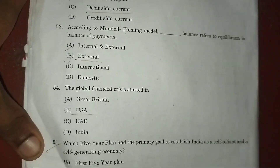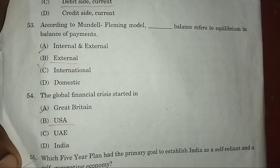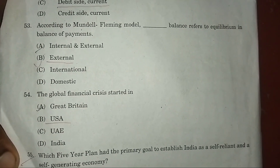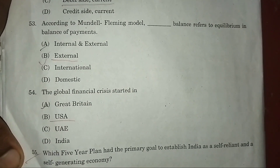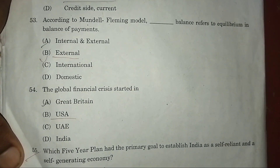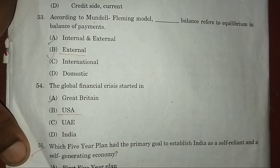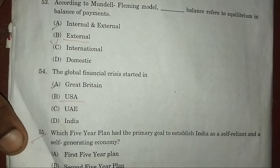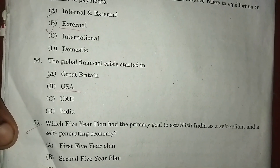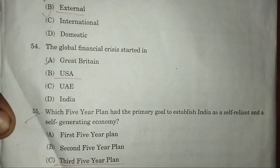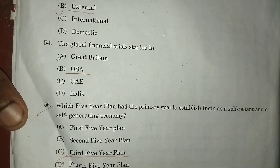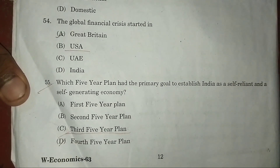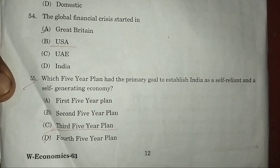Question 53: According to the Mundell-Fleming model, external balance refers to equilibrium in the balance of payments — answer: B — external balance. Question 54: The global financial crisis started in the first phase in the US.